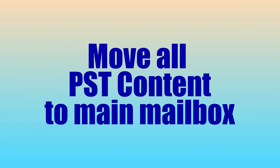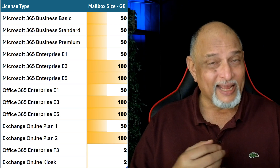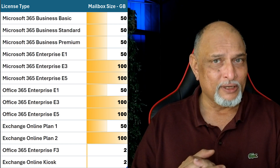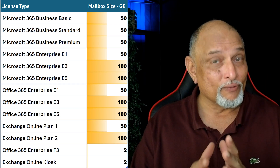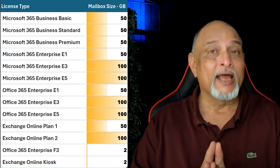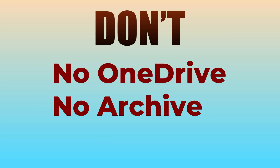Short answer first: move all the mails and whatever else you want from the old PSTs to your main mailbox. Look at this table — except for the last two items, all other Microsoft 365 or Office 365 licenses have at least 50 GB mailbox. So generally there is no need to put that PST in OneDrive or find some workaround or put it on some archive. It can fit into your main mailbox.